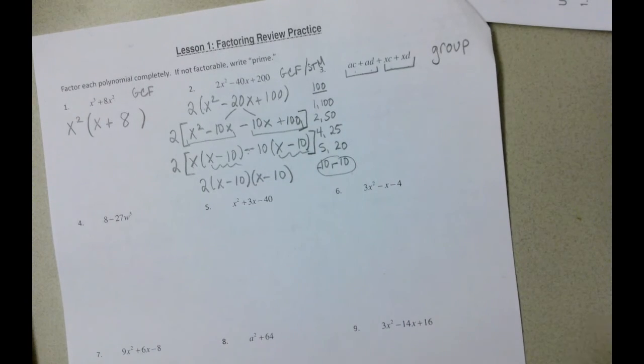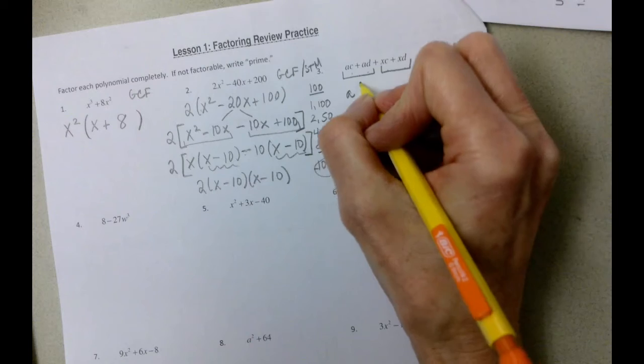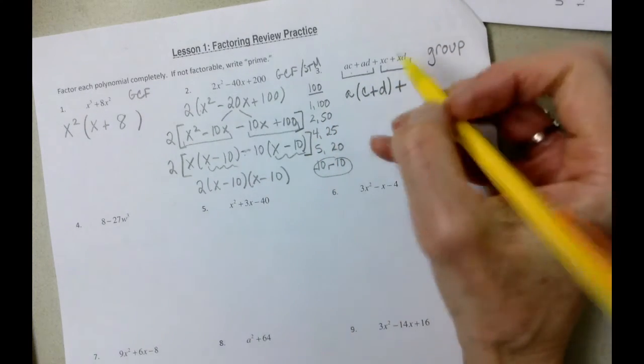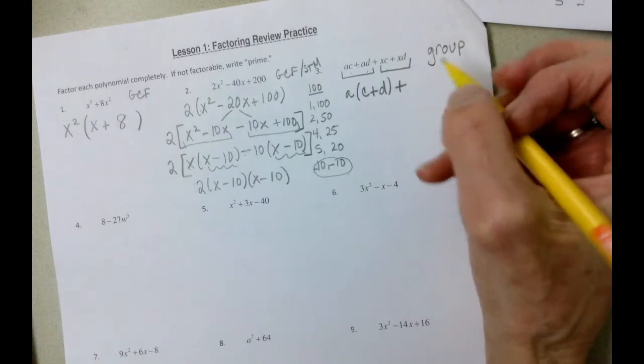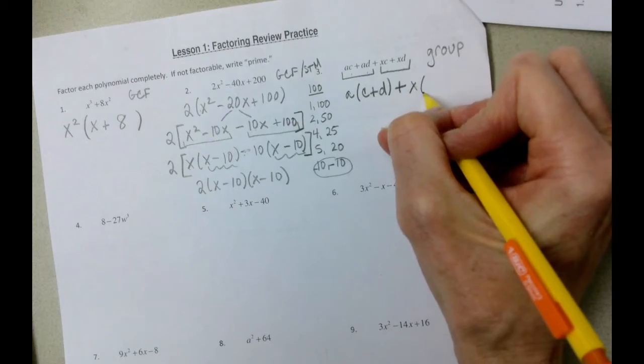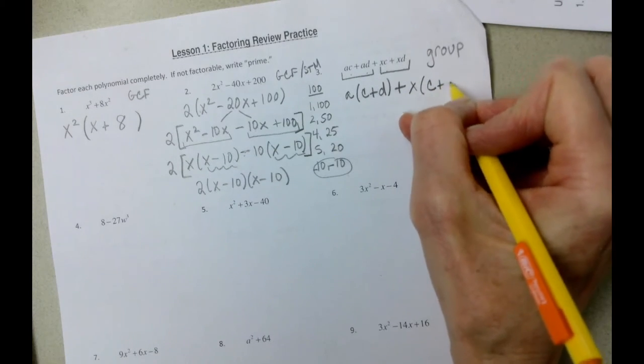The greatest common factor in that first group is an a. And we're left with c plus d. Notice how I wrote the plus there for the second group. The greatest common factor in our second group is an x. And then we're left with c plus d.